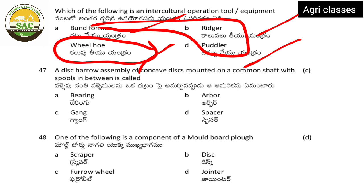In a disc harrow, the assembly of concave discs mounted on a common shaft with spools in between is called an arbor. Next: one of the following is a component of moldboard plough — the correct answer is jointer.